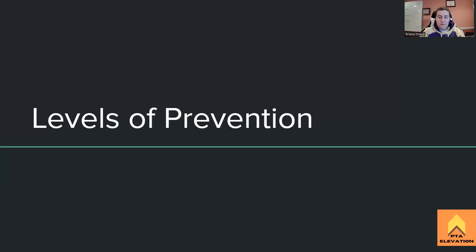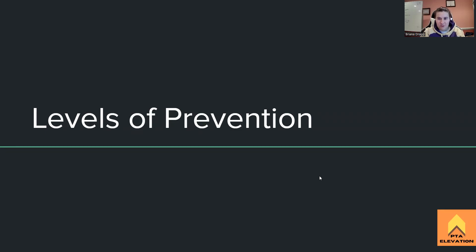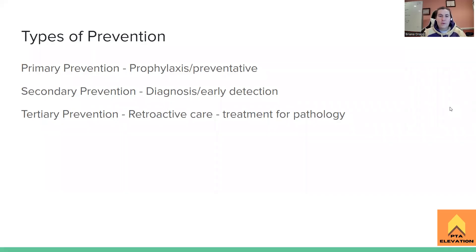Alright guys, today we're going to be going over levels of prevention. This might be something you've heard about previously — it's about decreasing the risk of pathologies happening with a patient, or if there are active pathologies, understanding different classifications of how we treat them. This is different from the stages of wound healing — primary intention, secondary intention — that's wound healing. Don't get those two confused.